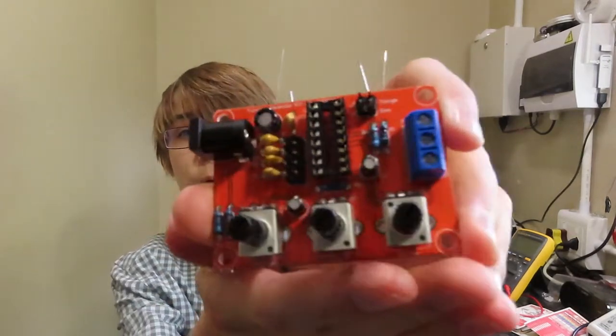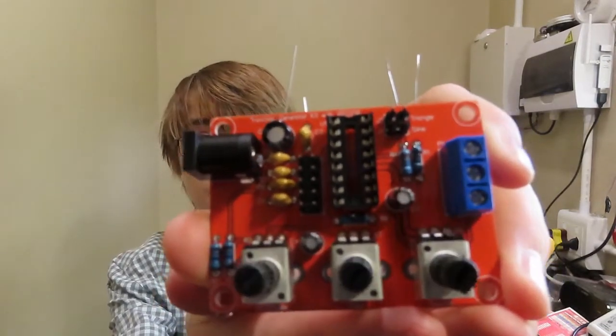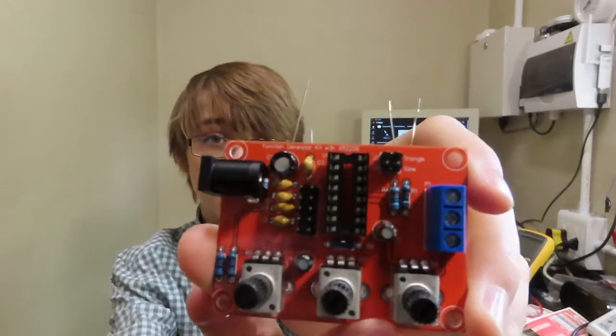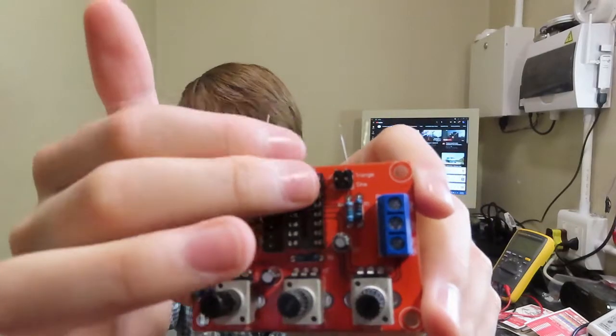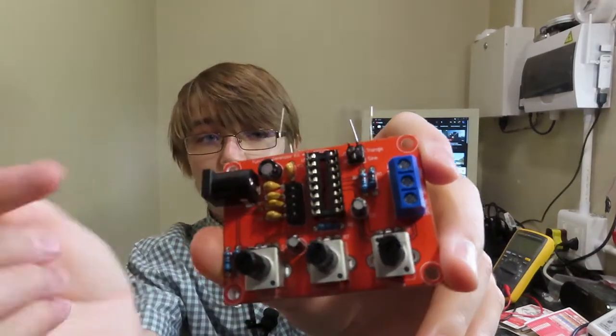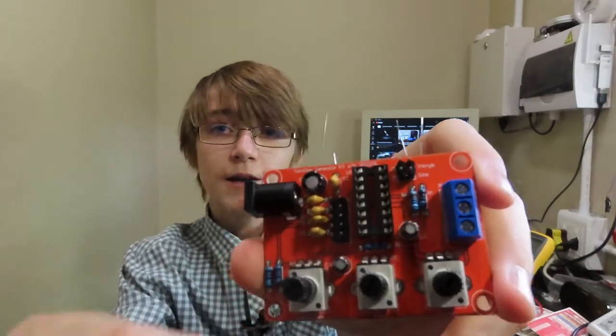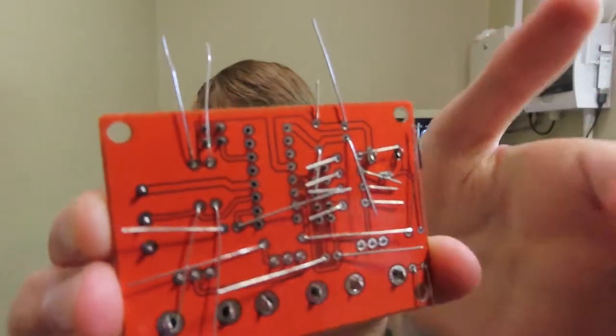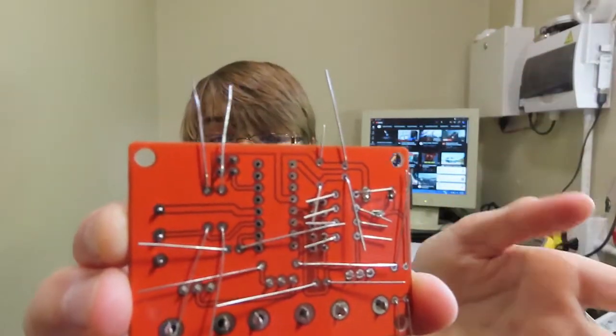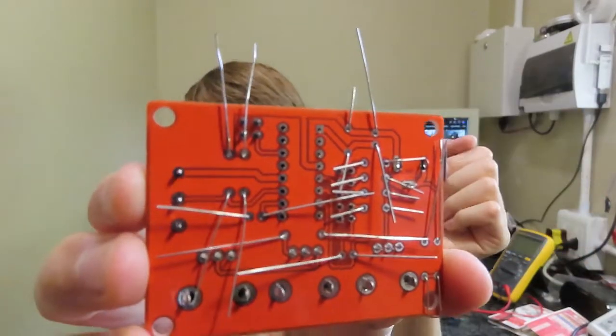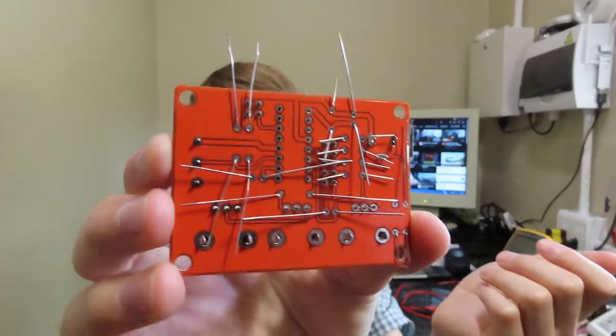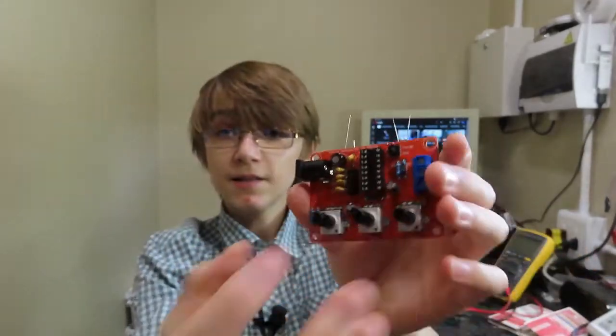So now everything is done. All the components are in and ready to be soldered. Now, this is sort of how it's going to look. I haven't put the main chip in because you don't want to solder it while the chip is in there, because you risk damaging the chip. And this is how the back looks. All of these really long leads, I'm going to cut after I've soldered. It's just so all the components will stay in the board. So let's solder it.